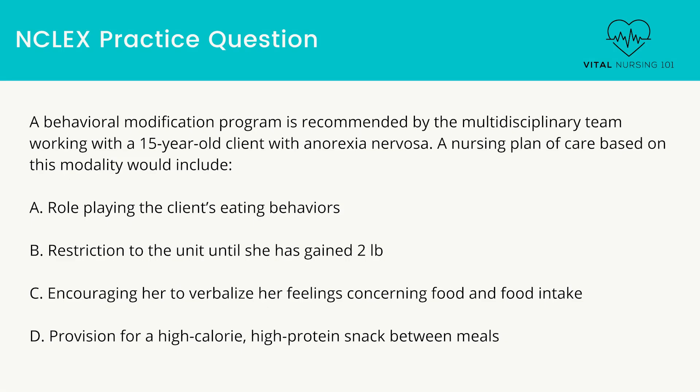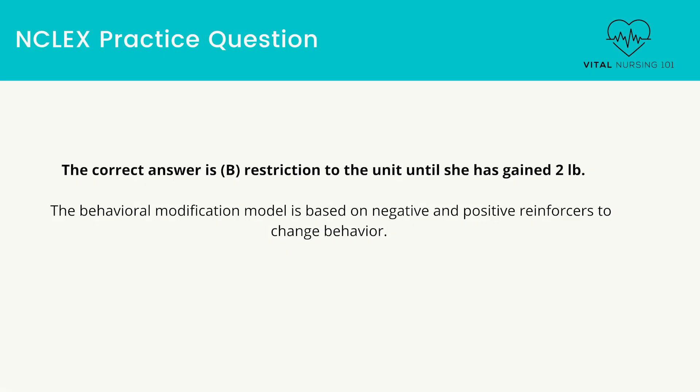A behavioral modification program is recommended by the multidisciplinary team working with a 15-year-old client with anorexia nervosa. A nursing plan of care based on this modality would include: role-playing the client's eating behaviors; restriction to the unit until she has gained two pounds; encouraging her to verbalize her feelings concerning food and food intake; provision for a high-calorie, high-protein snack between meals. The correct answer is restriction to the unit until she has gained two pounds. The behavioral modification model is based on negative and positive reinforcers to change behavior.